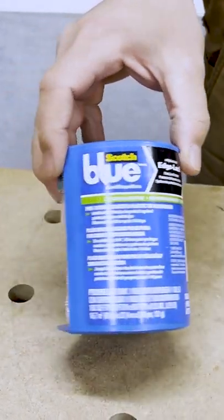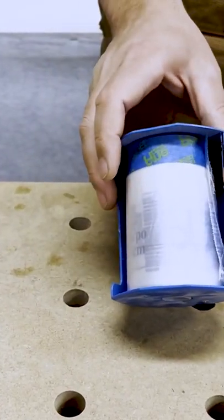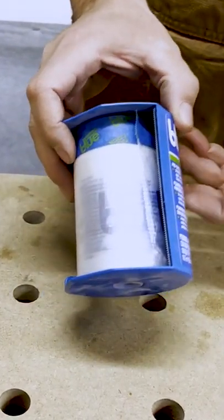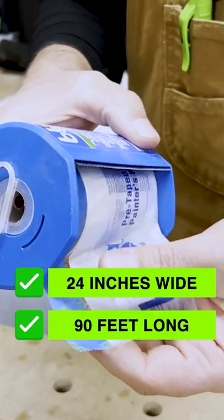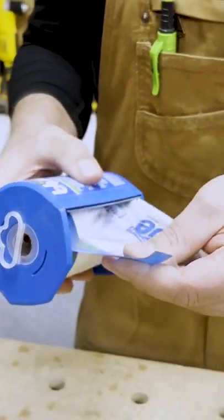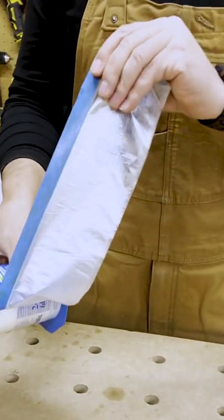This comes with the poly right attached to the tape and it has the edge lock system in it. This is 24 inches wide and 90 feet long, so you've got lots of material here to get your job done.